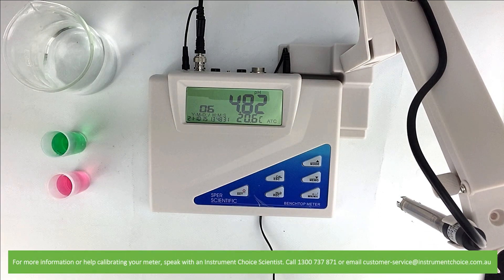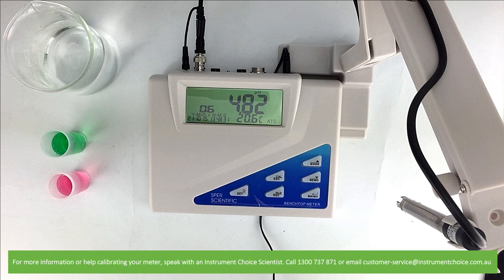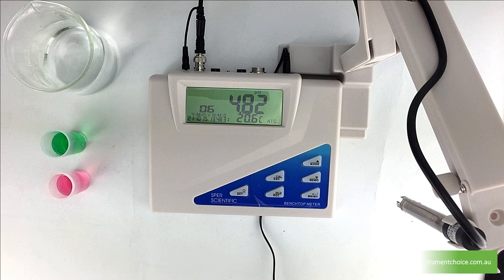For more information or help calibrating your meter, speak with an Instrument Choice Scientist, call 1300 737 871 or email customer-service at instrumentchoice.com.au. We hope that you found this video helpful. Thanks for watching!